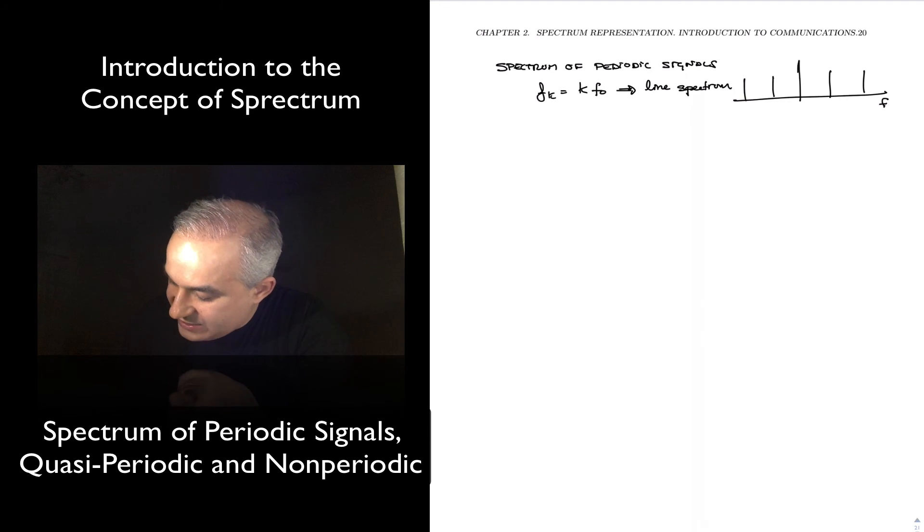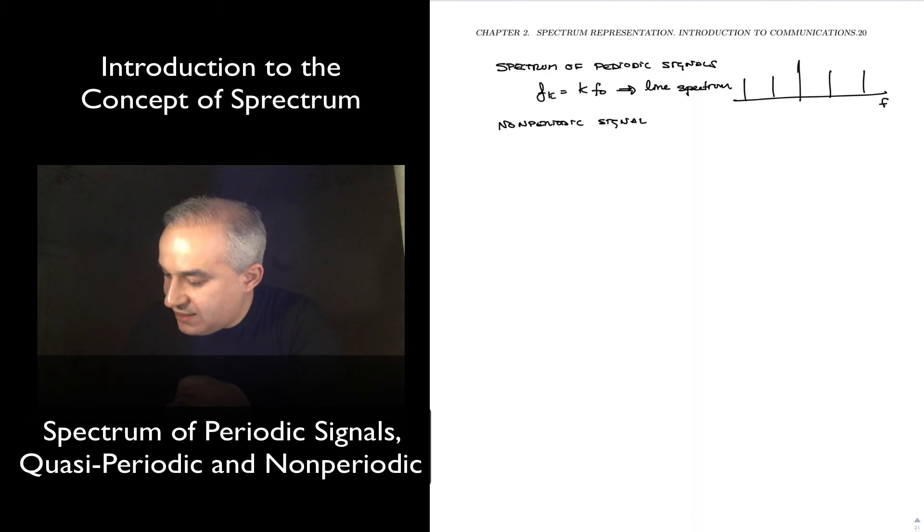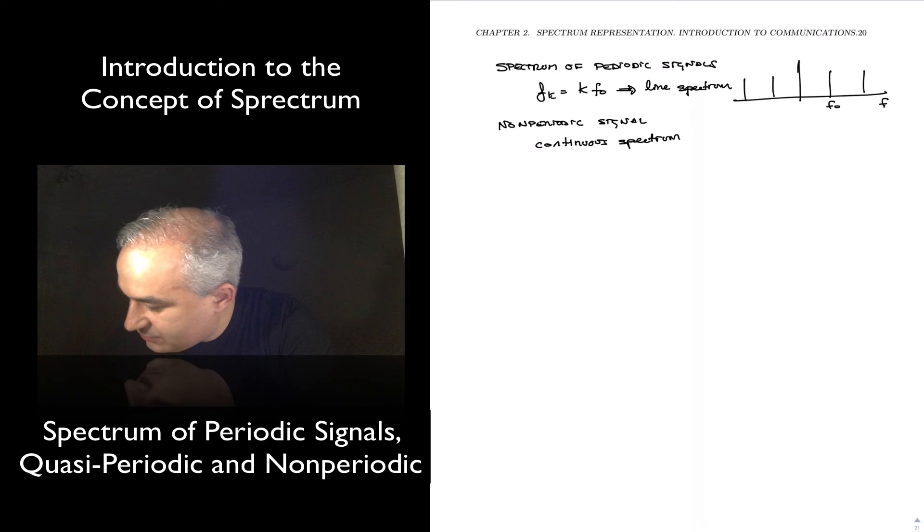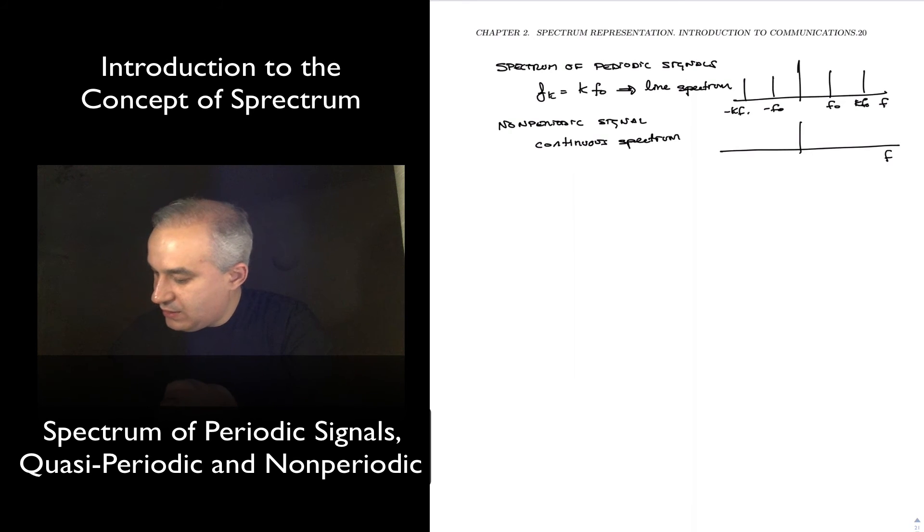If you have a non-periodic signal, however, you will get a continuous spectrum. So this will be maybe f_0, this is going to be some k*f_0, minus f_0, minus k*f_0 for a particular k. A non-periodic signal may have a spectrum that is a continuous function.